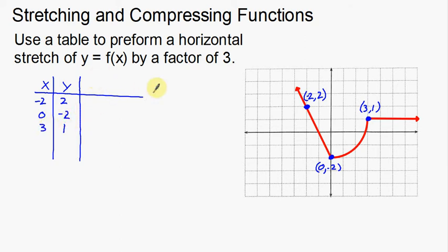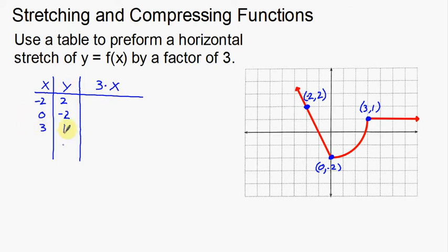Now I need to figure out what to do in the third column. I'm performing a horizontal stretch. Horizontal means left and right, which is my x-axis, so I'm going to affect my x-coordinates. This is a little different from previous videos where we just affected the y-axis — now we're actually going to affect the x-axis. I'm going to multiply my x-coordinates by 3.